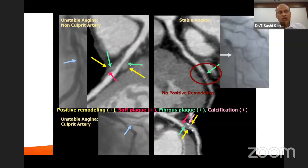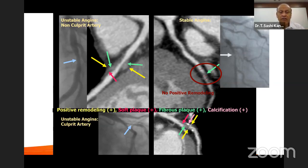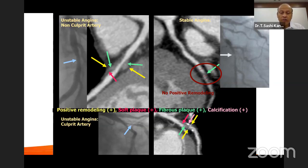If you look at this CT angiogram picture, the patient had unstable angina in the non-culprit artery but also had stenosis in the coronary artery with positive vessel remodeling, a significant soft plaque, a fibrous plaque, and some calcification. A coronary vessel can be very well assessed with CT angiography to evaluate remodeling, soft plaque, fibrous plaque, and calcification — and the same assessment can be done with intravascular ultrasound and optical coherence tomography.